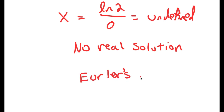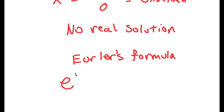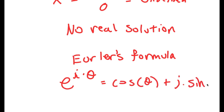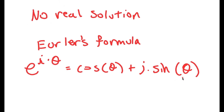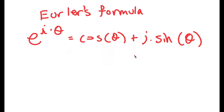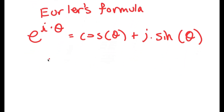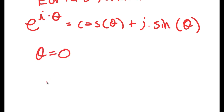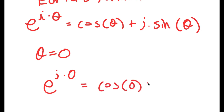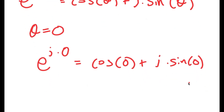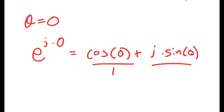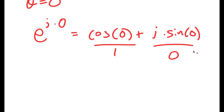To actually solve this, I'm going to use something known as Euler's formula. Basically, what this formula is: if I have something in the form e to the power of i times theta, this is equal to cosine of theta plus i times sine of theta. Now, let's say that theta is equal to 0. I get e to the power of i times 0 is equal to cosine of 0 plus i times sine of 0. Cosine of 0 is 1, and sine of 0 is 0. So this all equals 1.